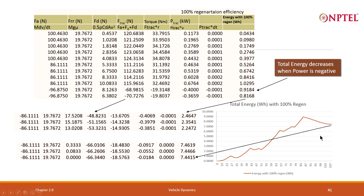Energy consumed keeps on building up but then goes down — because the vehicle is decelerating at the end. This is the regeneration energy being recovered. Since I have set R equal to 1, the energy recovered during deceleration considerably brings down the net energy consumed.